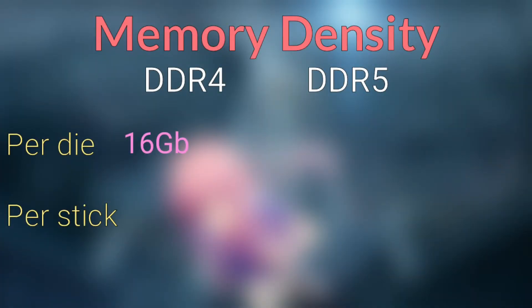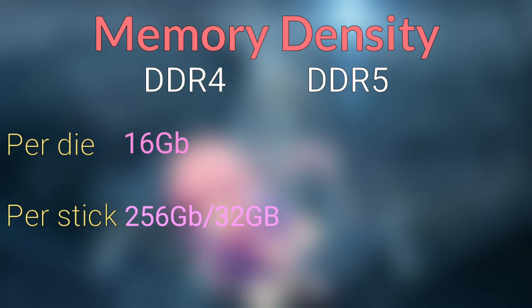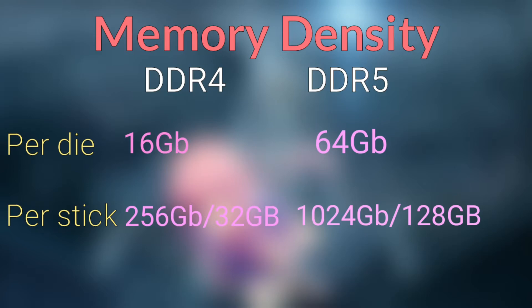Memory capacity: DDR5 will have up to four times the data density of DDR4. DDR4 can have 16 gigabits per die and fit up to 16 dies on a stick, giving 256 gigabits — that's 32 gigabytes per stick. DDR5 has 64 gigabits per die with 16 dies, totaling 1024 gigabits — that's 128 gigabytes on a single stick. That is mind-blowing.